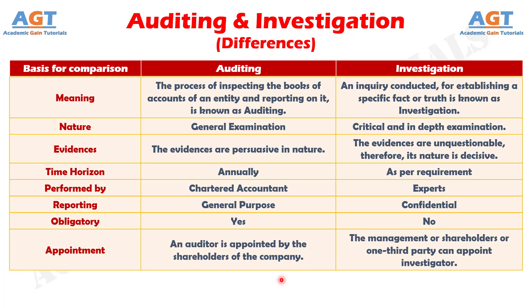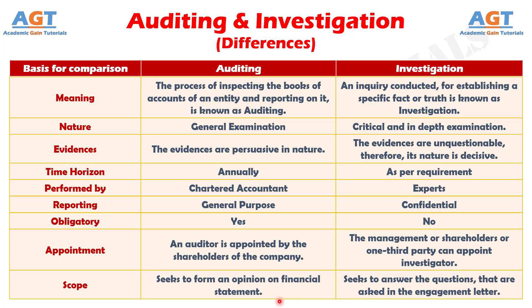Number eight: the appointment of an auditor is made by the shareholders of the company. As against this, an investigator is appointed by the owners, management, or a third party. Difference number nine: the scope of auditing is general, which attempts to give an opinion on the financial statement of the company. On the contrary, the scope of the investigation is limited, as it attempts to answer only those questions that are asked in the engagement letter.